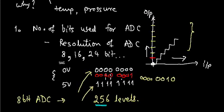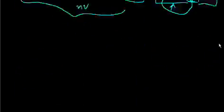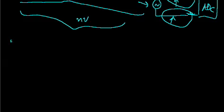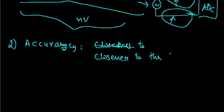So, the first parameter is understood. We will go to the second parameter. Second parameter is the accuracy. Accuracy is the closeness to the correct value.